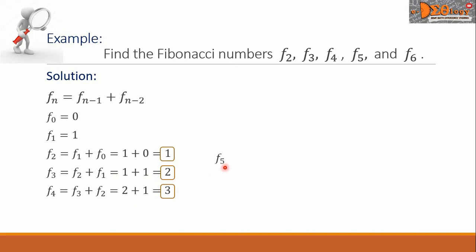Now, F sub 5 equals F sub 4 plus F sub 3. F sub 4 is 3 plus F sub 3 is 2. So the sum is equal to 5.